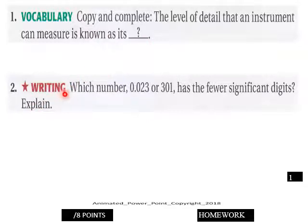And then writing: which number here has fewer significant digits? Explain that. You got eight points here on page one.